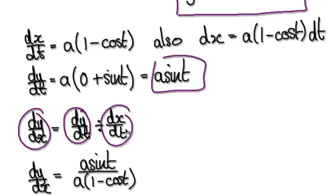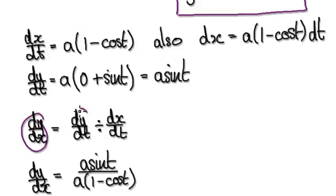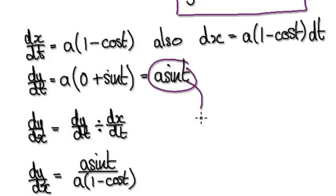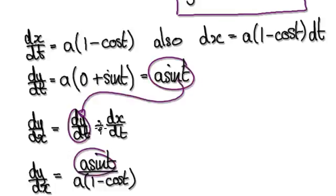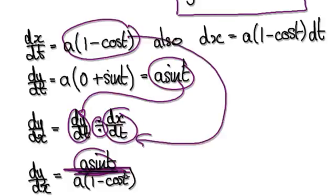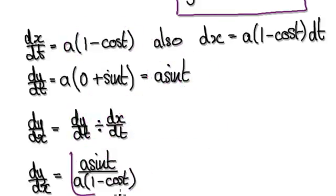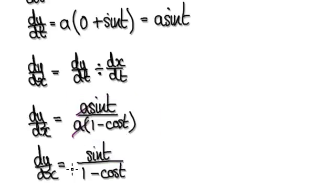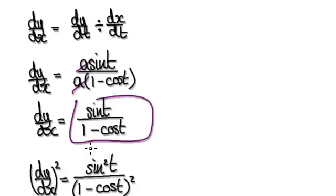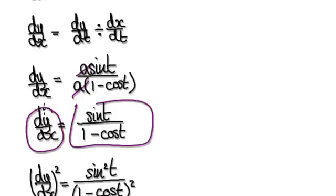So dy by dx is given by dy by dt divided by dx by dt. dy by dt is this expression, so we substitute it in as the numerator, and dx by dt is this expression, which goes in the denominator. This gives us dy by dx. Tidying this up then gives you the simplified result for dy by dx.